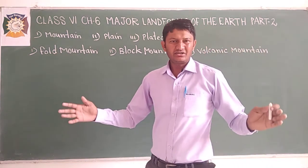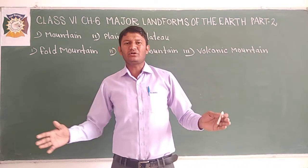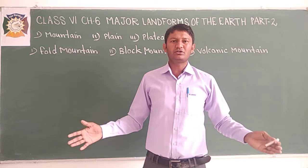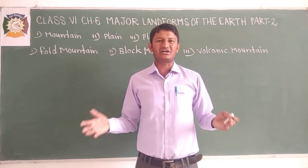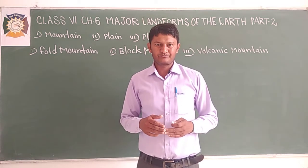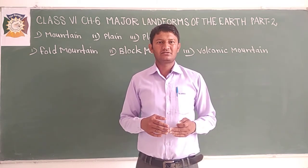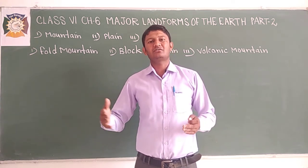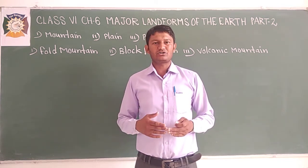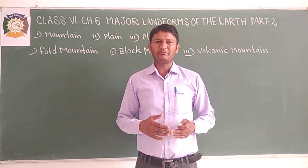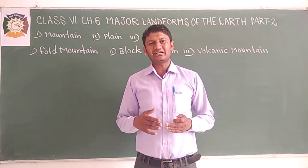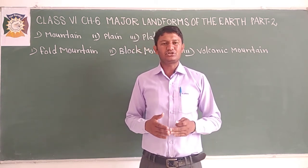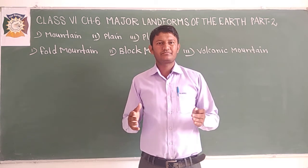Mountains may be arranged in a line — it is known as a mountain range. Dear students, in the world there are different types of mountain ranges. These are the Himalayas, the Alps, and the Andes. These respectively are located in various parts of the world: the Himalayas lie in the Asia continent, the Alps lie in Europe, and the Andes lie in South America.